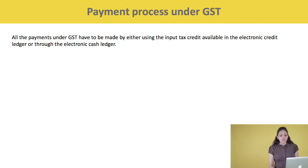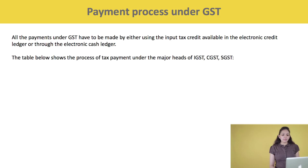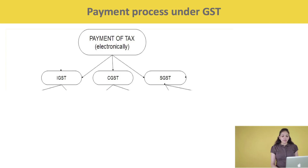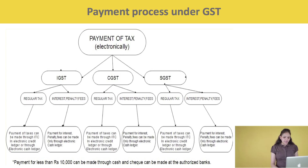All payments under GST have to be made either by using the Input Tax Credit available in the Electronic Credit Ledger or through the Electronic Cash Ledger. The payment of taxes can be made through ITC in the Electronic Credit Ledger and the balance through the Electronic Cash Ledger. However, payment of any IGST, CGST, or SGST liability for interest, penalty, or fee shall be made only through the Electronic Cash Ledger. The Electronic Credit Ledger cannot be utilized for payment of any interest, penalty, or late fee liability.